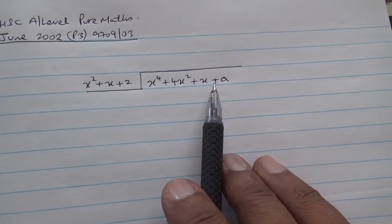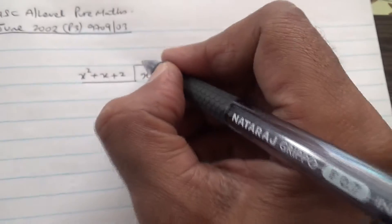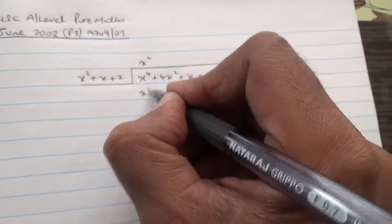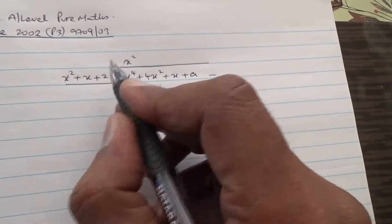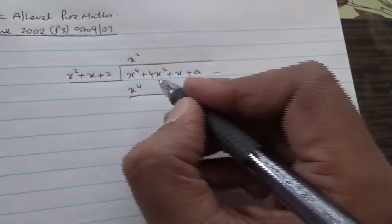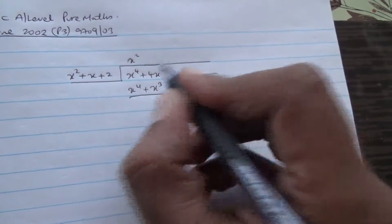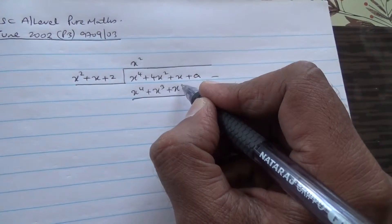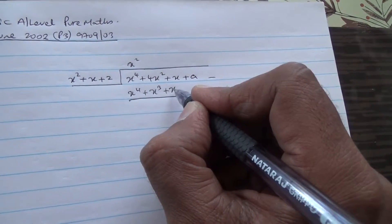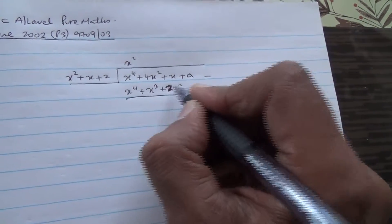We're going to have to perform a long division here. So x power 4 divided by x power 2 is going to give us x power 2. x power 2 times x power 2 is x power 4. Subtract. This cancels out. x power 2 times x is x cube, so we got plus x cube. x squared times 2 is plus 2x squared.